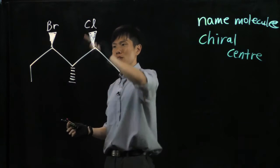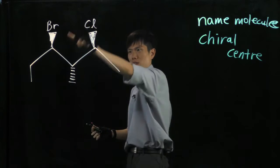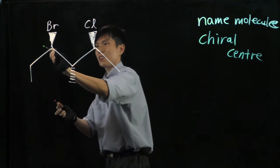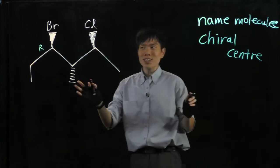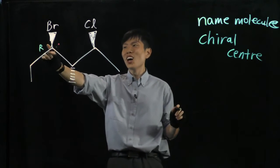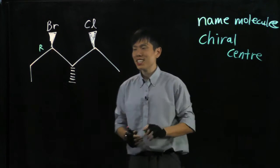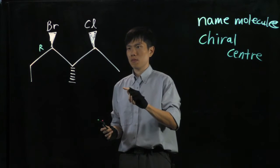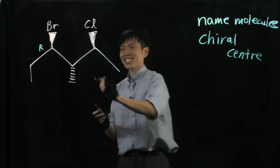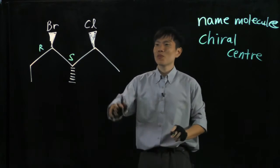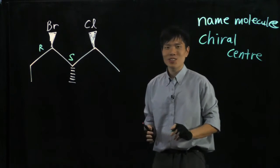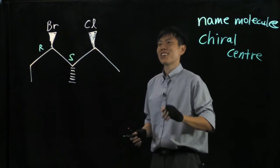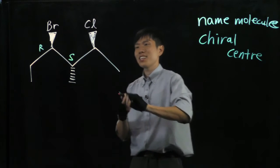For this carbon I'm pointing to, it is R. You can use your own method to do it, but it is R. The next one here is S. And the last one, you see I'm doing normal speed, is S.